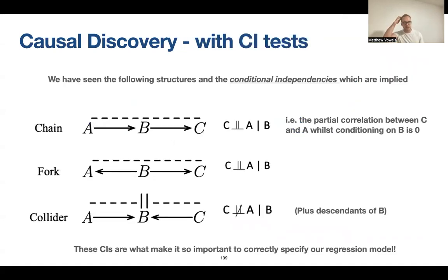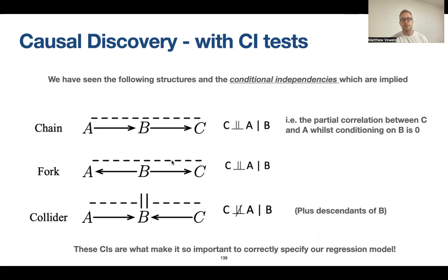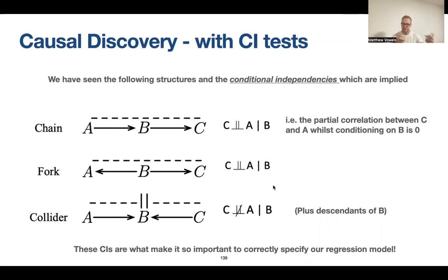Let's look at this slide we've already seen, which summarizes the three rules. For a chain, all variables are pairwise correlated, but conditioning on B induces an independency between A and C. Very similar for the fork — everything's pairwise correlated, but A and C are independent if I condition on B. Finally, the collider is the exception: A and C are already independent unless I condition on B, which then tells me something about both A and C. Knowing these conditional independency statements means we can actually test for them — we can look at the data, condition on certain things, see if things are correlated or not, and make inferences about the presence of certain causal links.